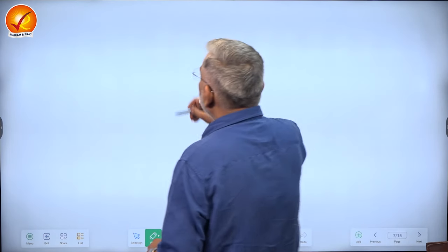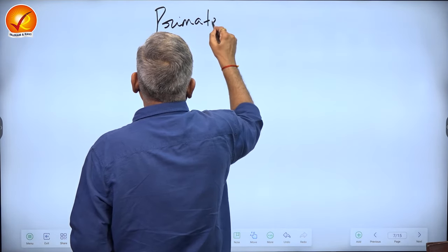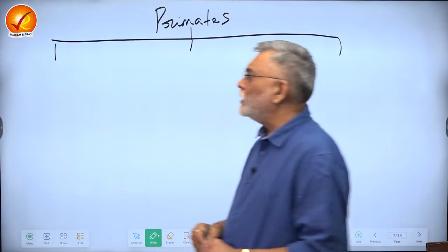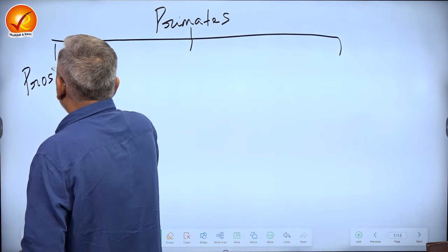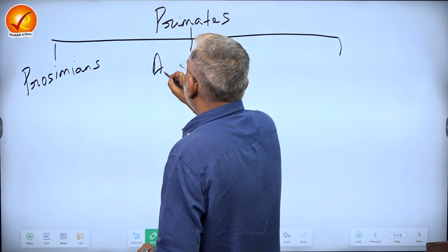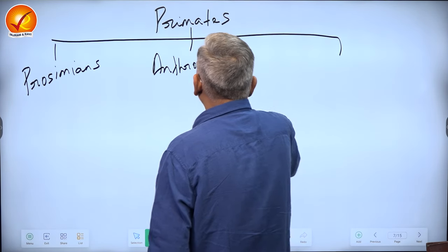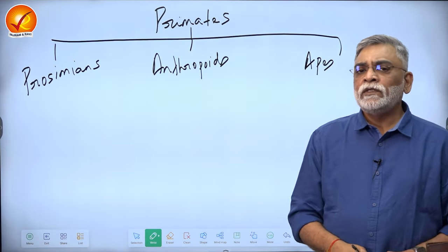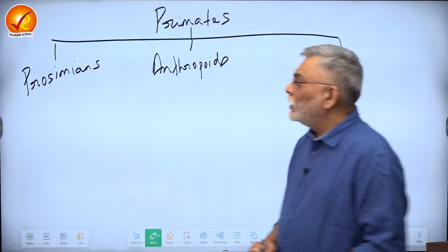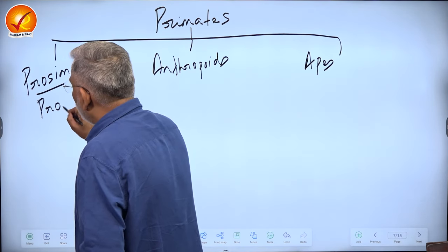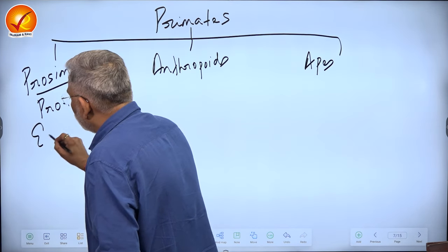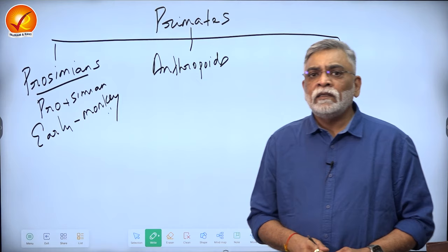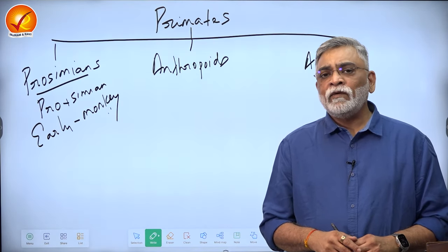Coming more specifically to the order primates, there are very broadly three types of primates in the world. They are broadly classified into the prosimians, the anthropoids, and the apes. We are only looking at the non-human primates. The word prosimian is derived from pro plus simian - pro meaning early, and simian being Latin for monkey. Prosimians are the lowest of the primates, the first batch to have evolved on earth. In fact, primates evolved from insectivores when these insectivores took to the trees to escape carnivore predation.